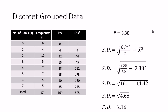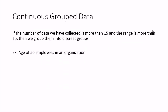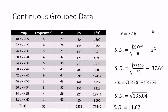The third example is the continuous grouped data set — age of 50 employees. Because we have groups, we cannot assign a specific value to each group, so we take the group midpoint as the x value, same as in the mean calculation. We compute fx and fx-squared columns. Sigma fx-squared is 77,440; dividing by 50 and subtracting the mean (37.44) squared, then taking the square root gives a standard deviation of 11.62.